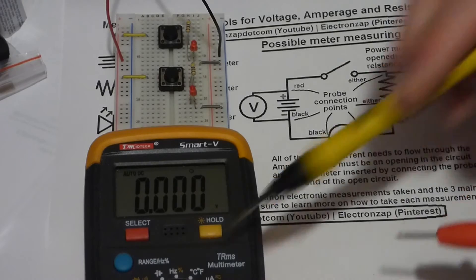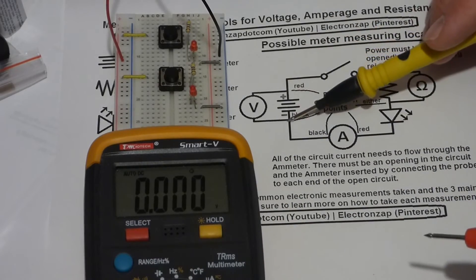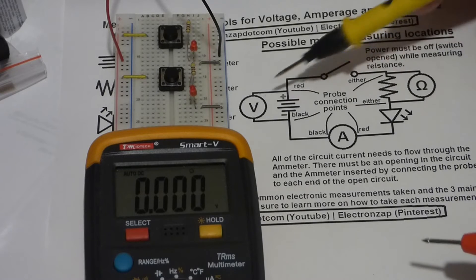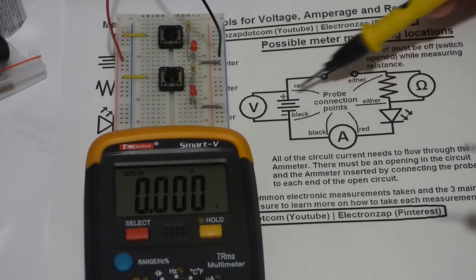Now another nice thing about the voltmeter—in this case it's a multimeter but it has a voltmeter in it—you can measure the battery while it's part of the circuit. That's the nice thing about voltage: you can measure a bunch of stuff while it's still in the circuit.